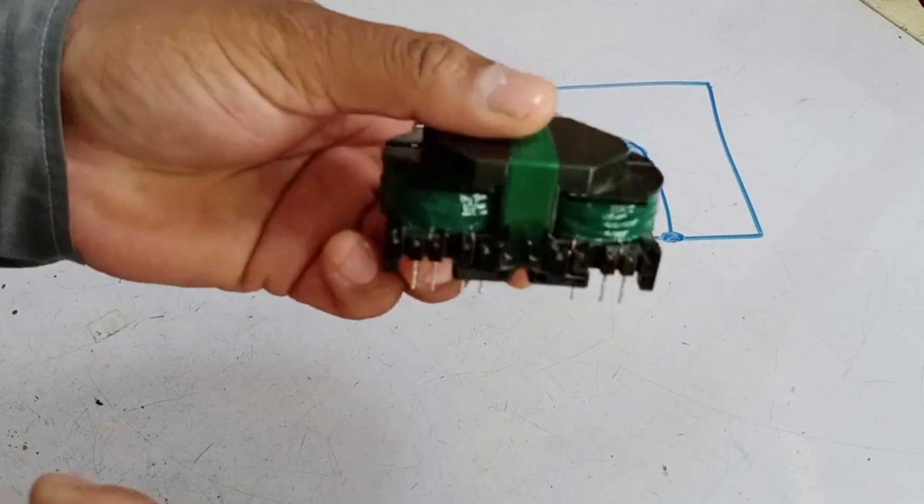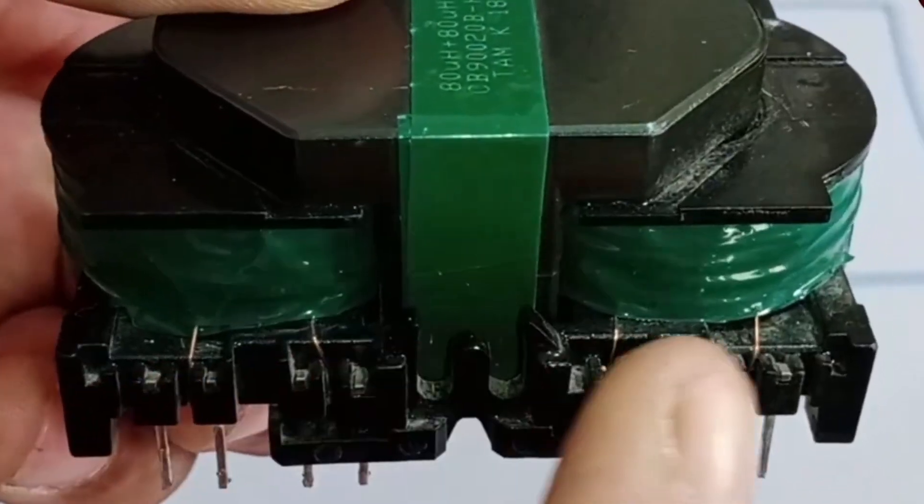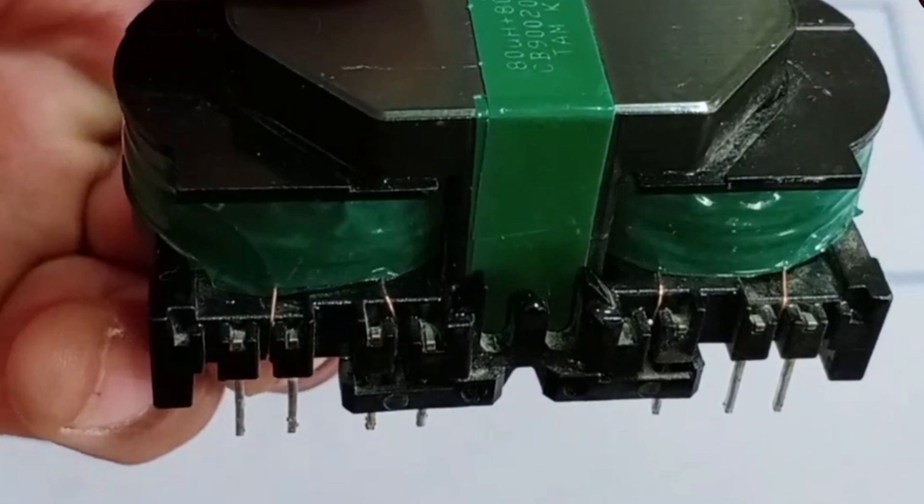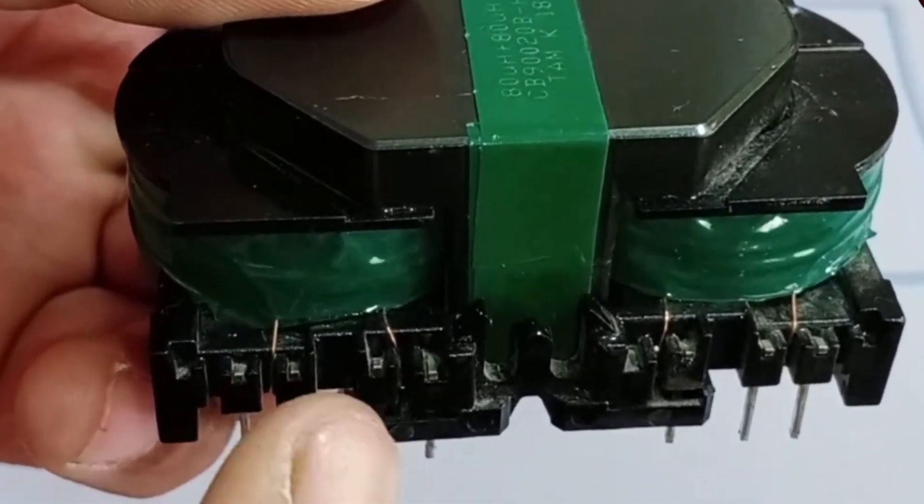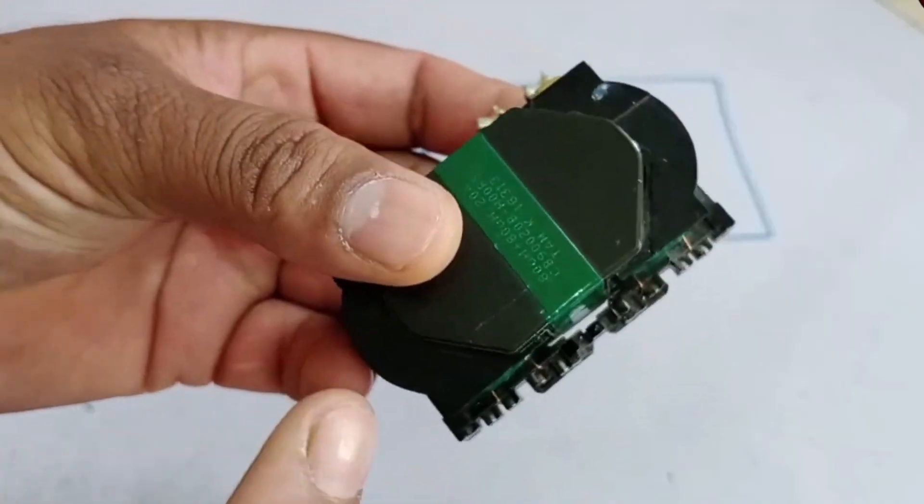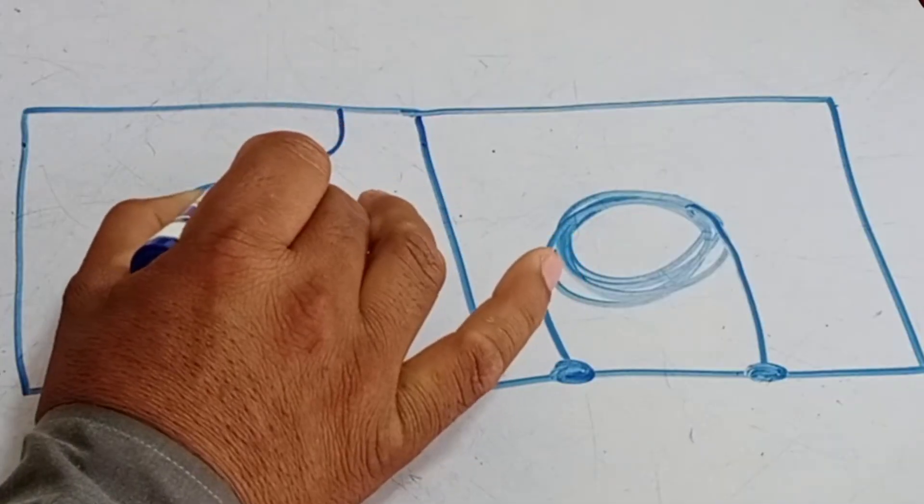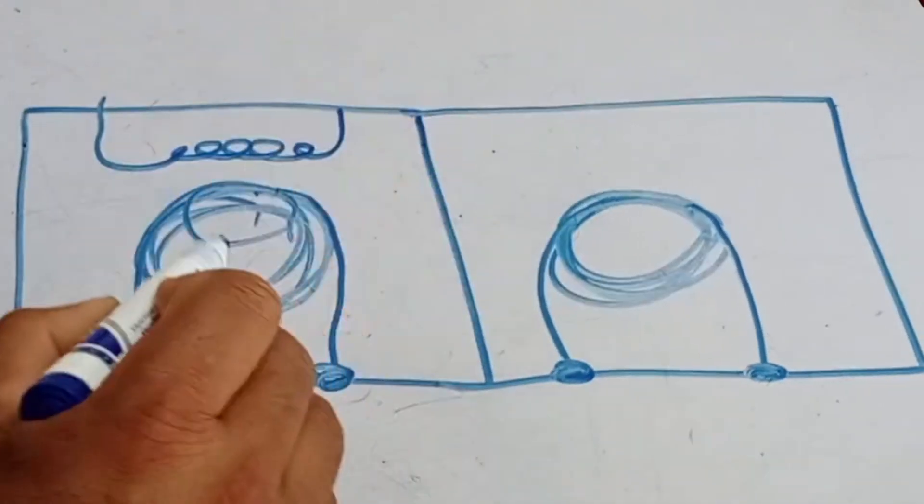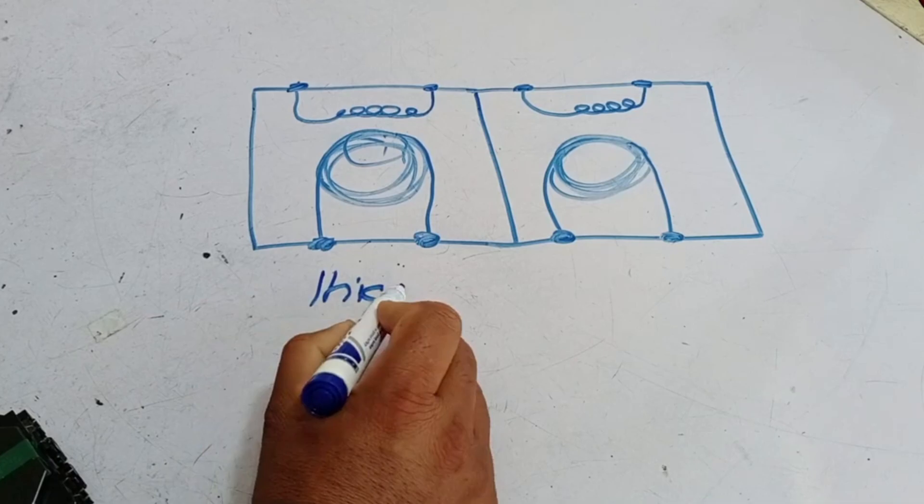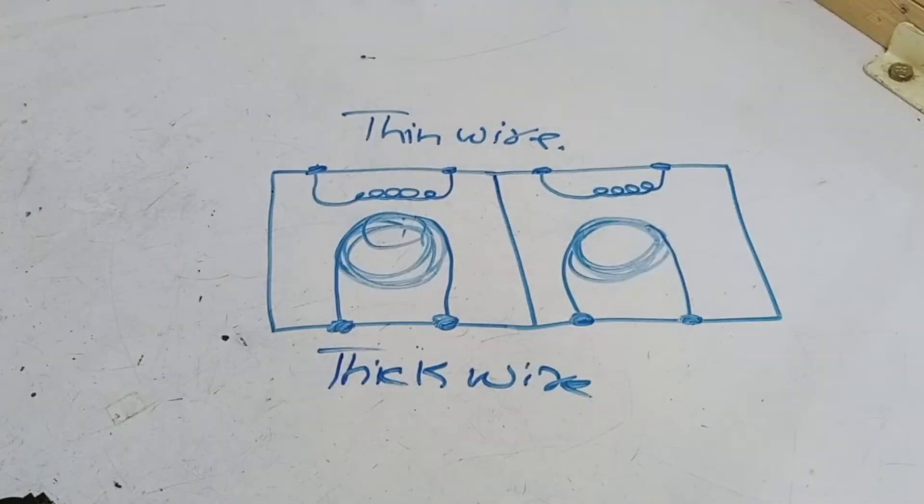In addition to this, on the other side, we can also see some wires. These wires have their own specific purpose and working mechanism. I will explain how they function on the PCB. Let's get back to its diagram. As you can see, the coils are placed separately and are not connected to each other. The lower wires are thick, while the upper wires are thin.